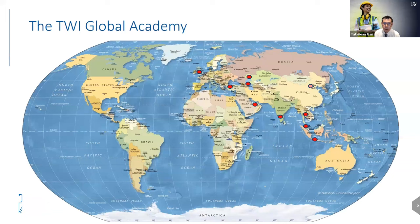Our global academy headquarters is in Cambridge, UK. We also have offices in other regions. The second largest entity is in Malaysia, followed by India, Abu Dhabi, Thailand, and Indonesia. Recently we have registered an office in China, and going forward next year we will have operations from that office.